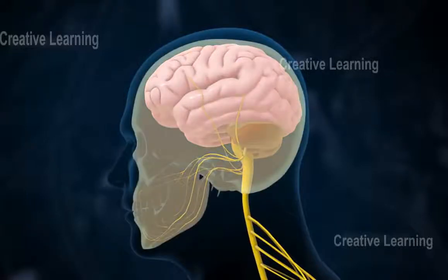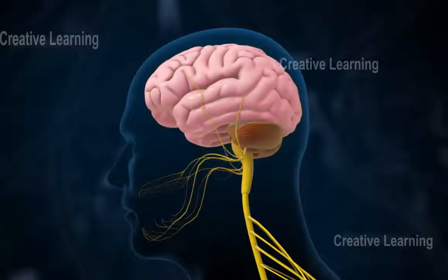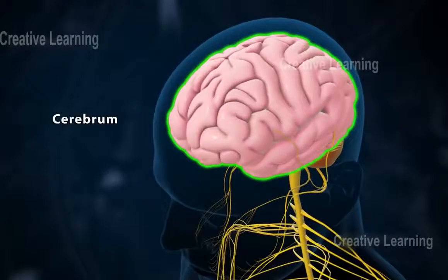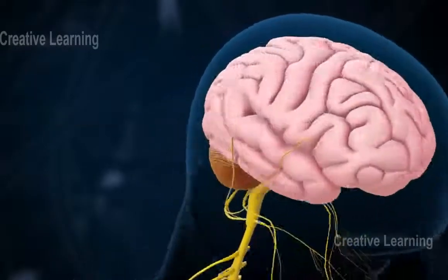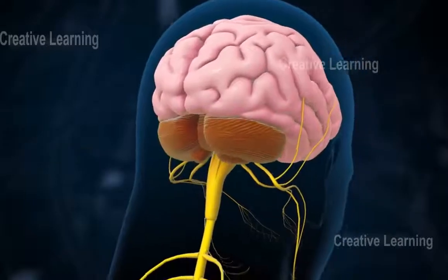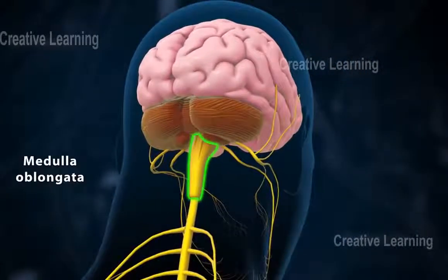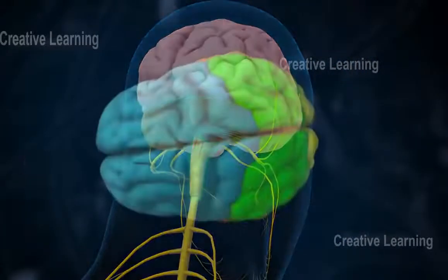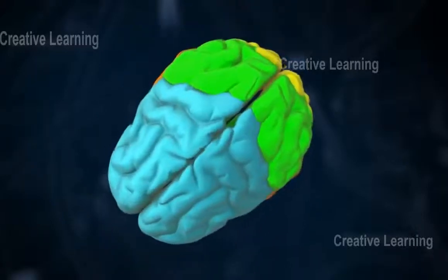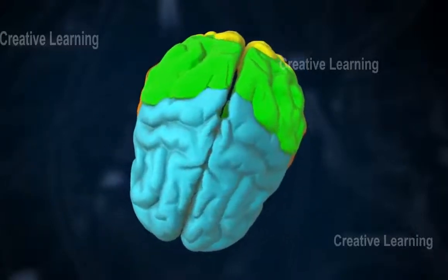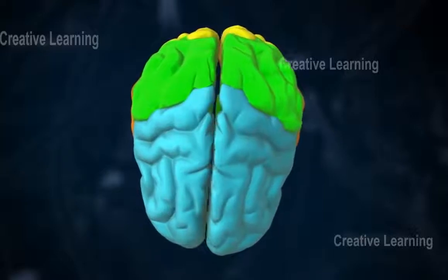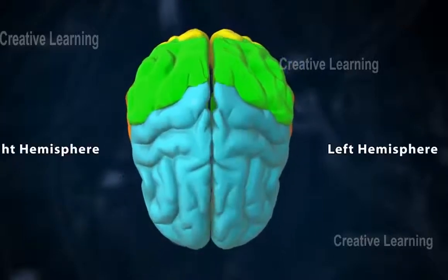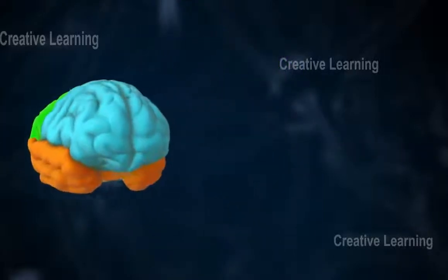The brain is located in the cranium of the skull. It is made of three main parts: the cerebrum, cerebellum, and medulla oblongata. The cerebrum is the largest part of the brain and is divided into left and right hemispheres.